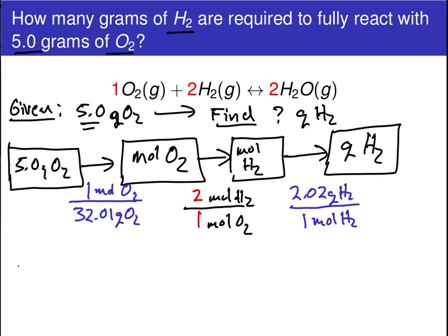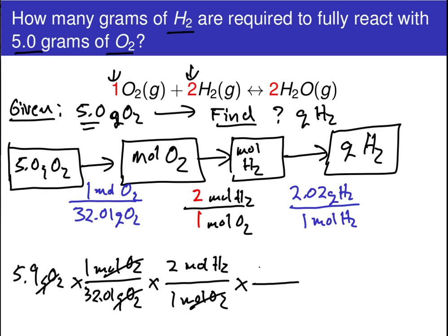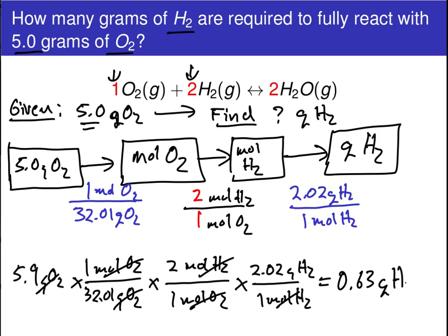Putting all of this together, we form an expression to arrive at our final answer. We start with 5 grams of O2, use the molar mass (32.01 grams per mole O2) — grams of O2 cancel, leaving moles of O2. We then use our conversion factor constructed from the stoichiometric coefficients to arrive at units of moles of H2, and finally carry out that last conversion to change from moles of H2 to our desired units of grams of H2, which gives us a final answer of 0.63 grams of H2.